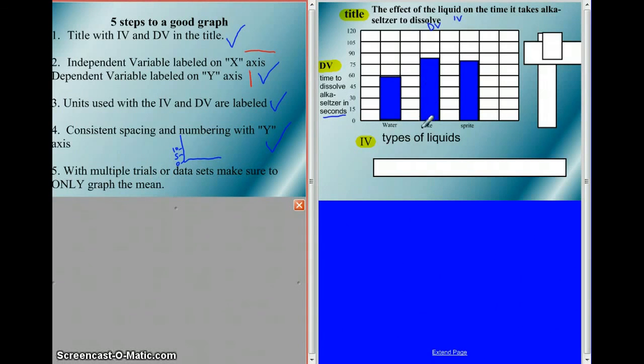In this case we had multiple trials. And this was the mean of all the trials for water, all the trials for Coke, and all the trials for Sprite. So yes, we've done that. So looks pretty good. This is what we're expecting for graphing. So bring questions and bring anything else you got to class tomorrow. And we'll practice graphing tomorrow. Thanks for watching.